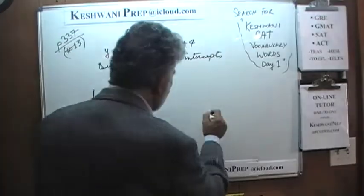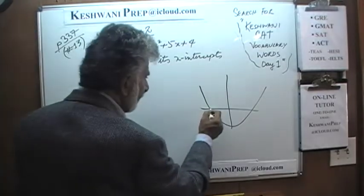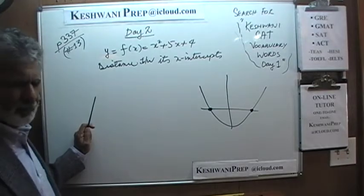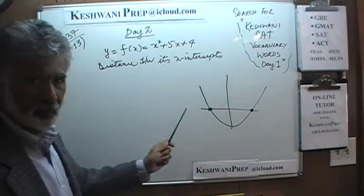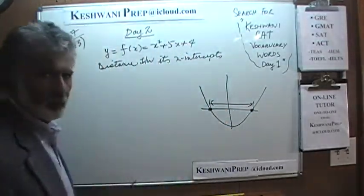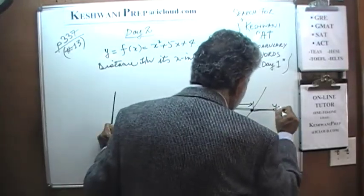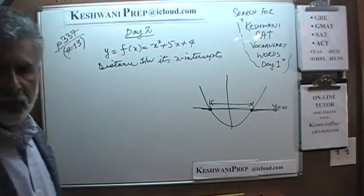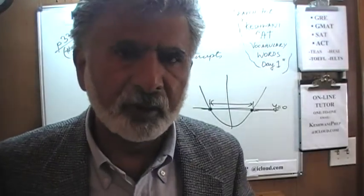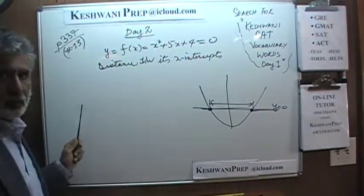For example, a typical parabola might look like this and it cuts the x-axis at these two points. The question is: what is the distance between these two points? Since this is the x-axis, y is equal to 0. In other words, what I'm trying to tell you is that we have to find a solution to this equation — we're going to set it equal to 0 and find the solution.